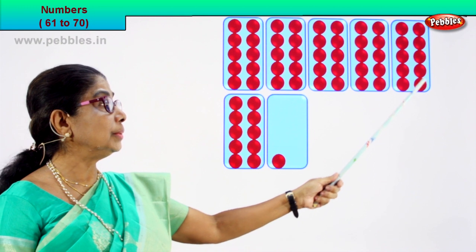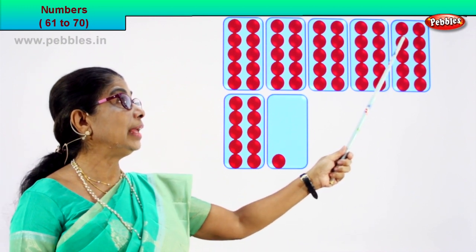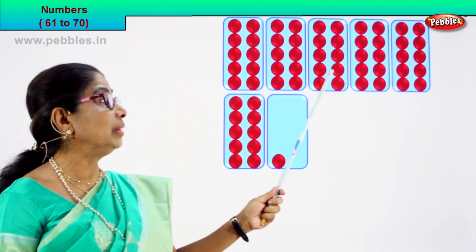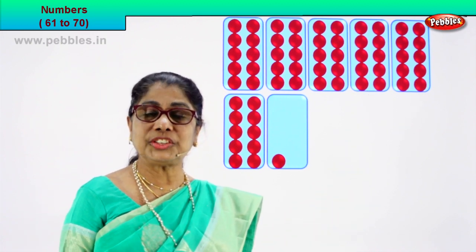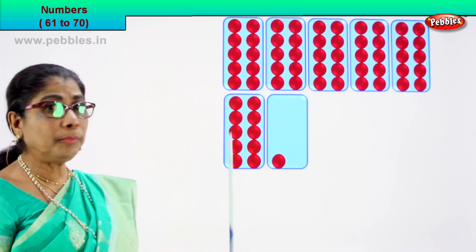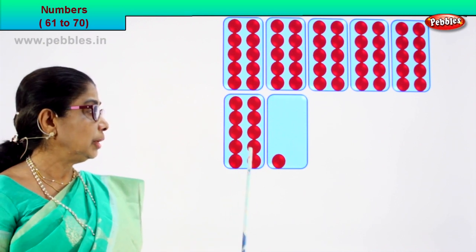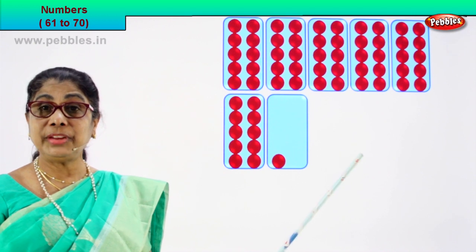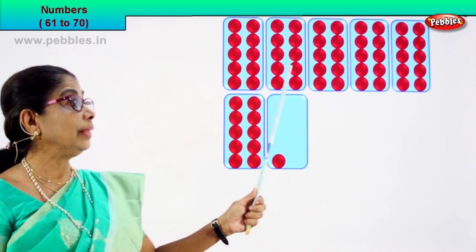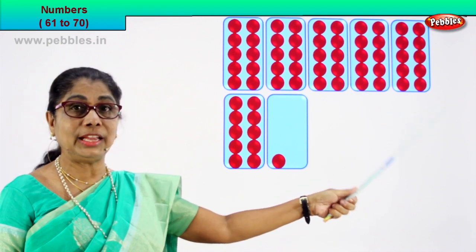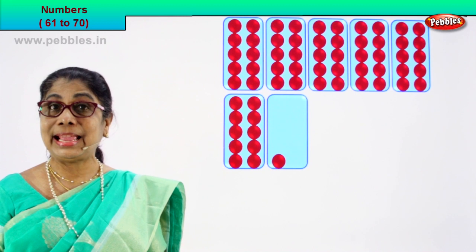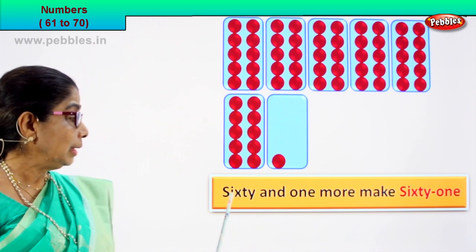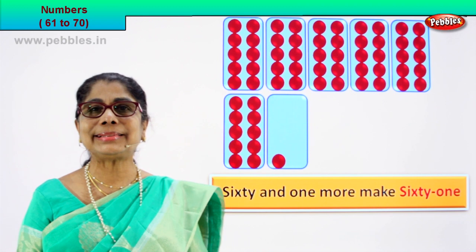Let's count the last box. One, two, three, four, five, six, seven, eight, nine, ten. So we have ten, twenty, thirty, forty, fifty. In each of those we have ten. Here we have one more box. Let's count. One, two, three, four, five, six, seven, eight, nine, ten. Now we have in every box ten. So ten, twenty, thirty, forty, fifty, sixty. We have a total of sixty and one more in the one box. So sixty and one more. Sixty-one.